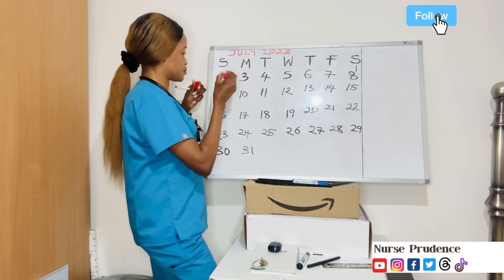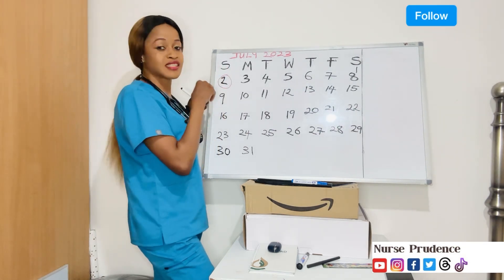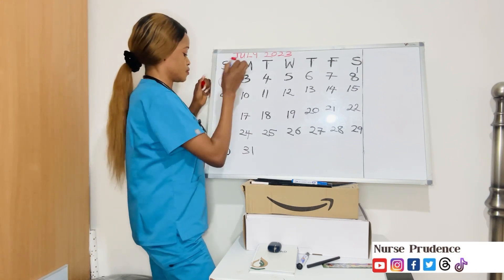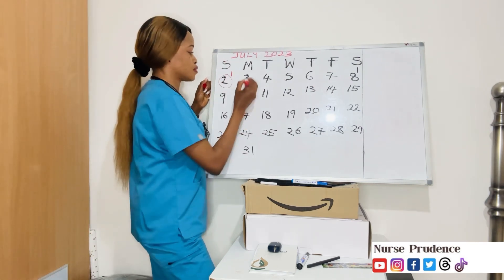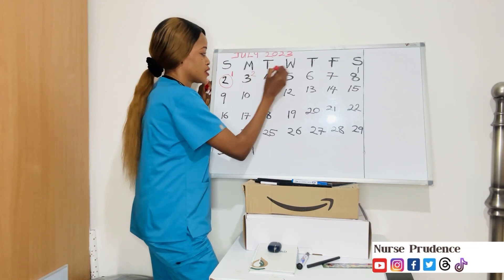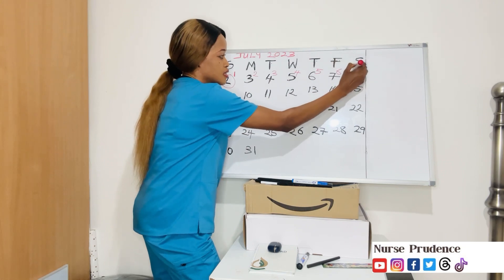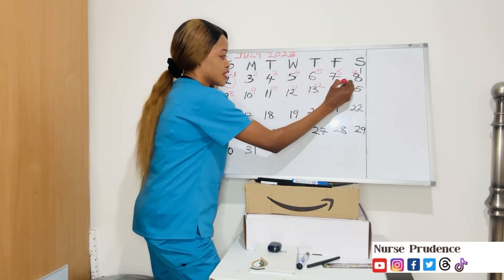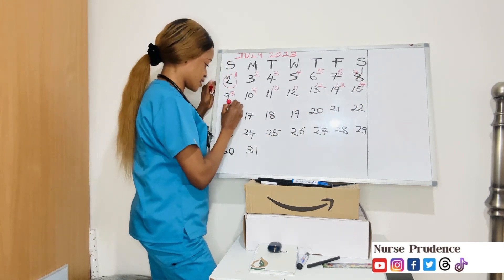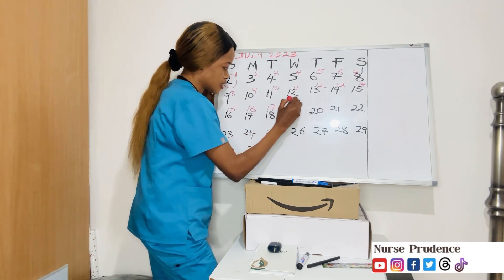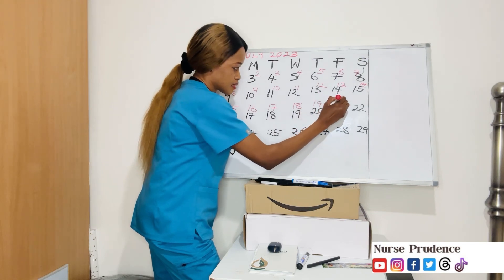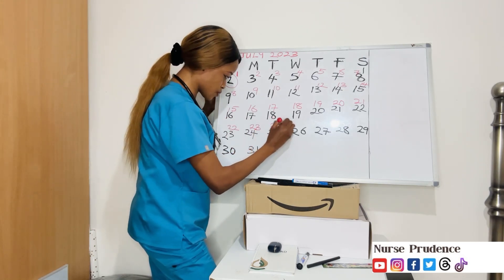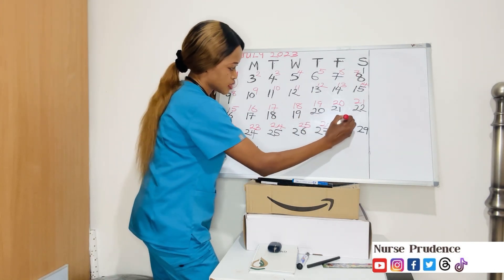So counting from day two through day twenty-seven on the calendar, we mark each day of her 27-day cycle starting from the 2nd of July.